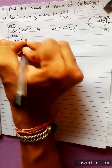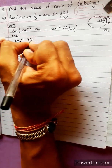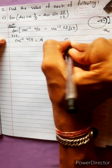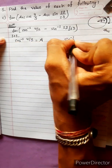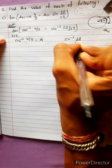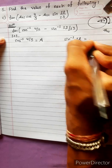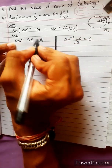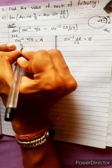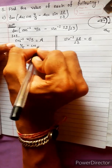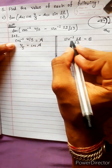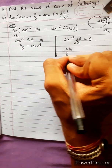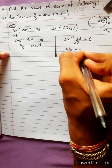Let cos inverse 4 by 5 equal to a, and also let sin inverse 12 by 13 equal to b. Transferring: 4 by 5 equals cos a, and 12 by 13 equals sin b.